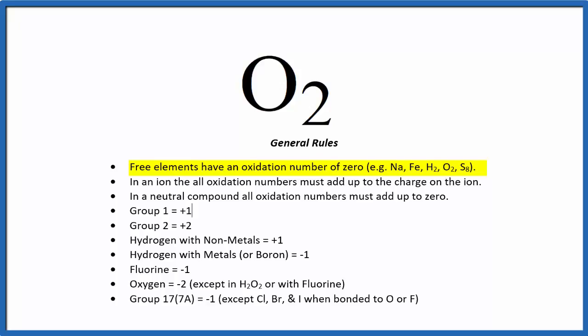When we have elements in compounds like H2O or SO3, these will have oxidation numbers because we have different elements combined to form the compound.